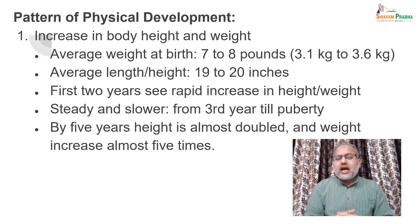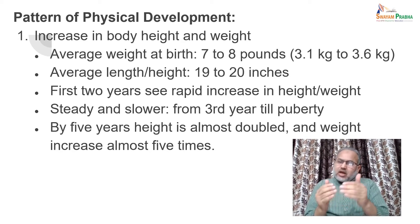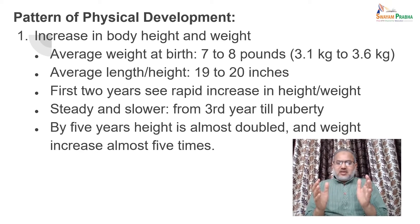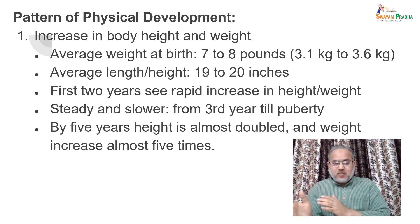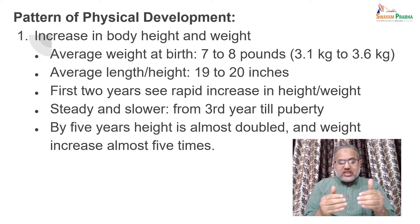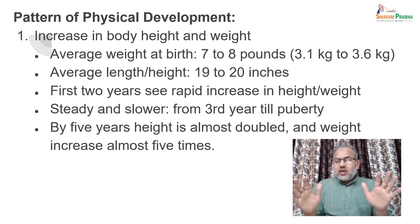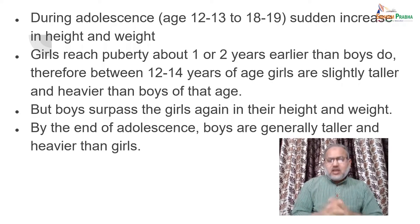Regarding increase in body height and weight: the average weight at birth is seven to eight pounds, equivalent to 3.1 to 3.6 kilograms. Average height at birth is 19 to 20 inches. The first two years show rapid increase in height and weight, but growth is steady and slower from the third year until puberty. By five years of age, height is almost double and weight increases almost five times.